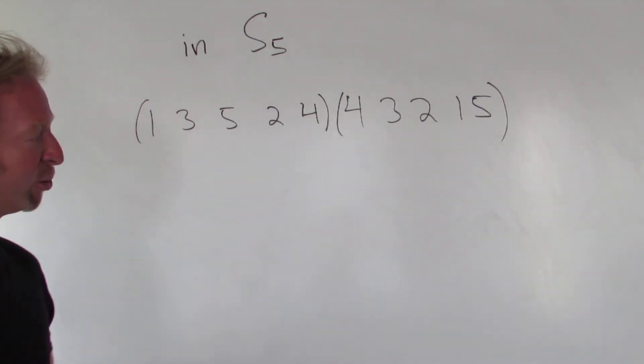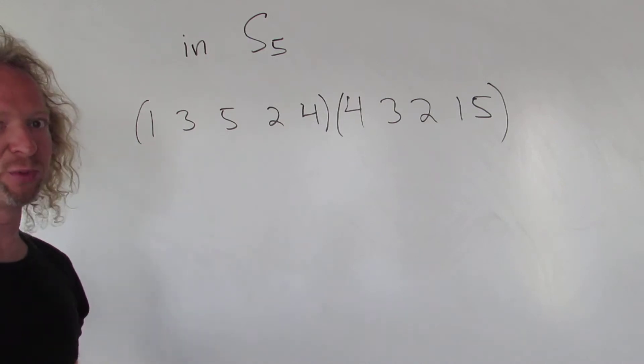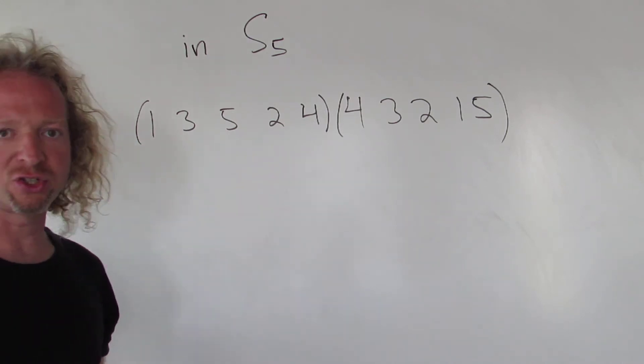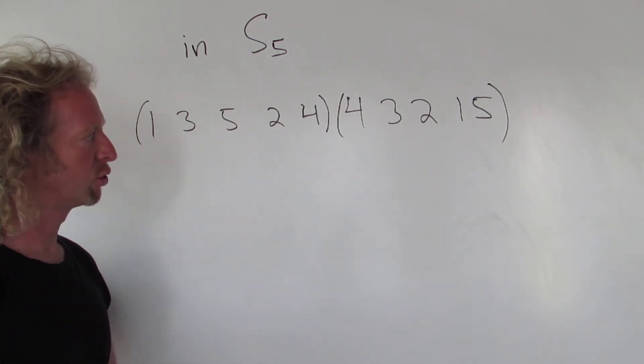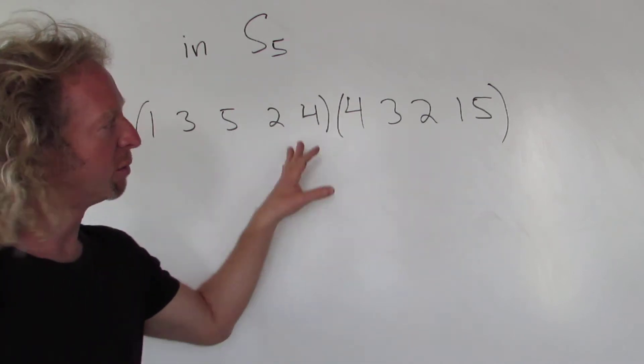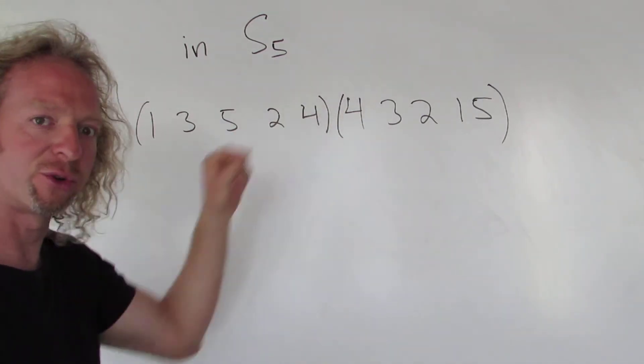Hey YouTube! In this video we're going to multiply two elements in the symmetric group of degree 5. So the multiplication usually takes place right to left. So we're going to start with the right. You can pick any number between 1 and 5. We'll start with the number 1.